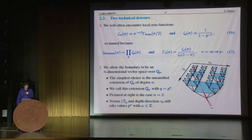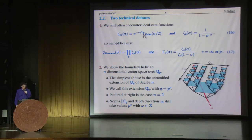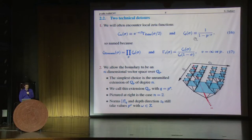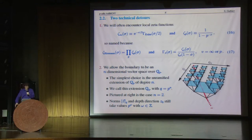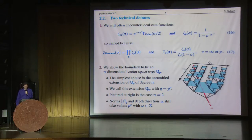Now let me tell you about the so-called local zeta functions. We define a local zeta function for the reals in a particular way, and then I have a more motivated definition of a local zeta function for the prime p. It's motivated because I can write the Riemann zeta function as what is called an Euler product over all primes p of these local zeta functions for each p. If you add in a relation for gamma functions, then the claim that the product over all v of the gammas equals 1 is an equivalent statement of Riemann's functional relation for the zeta function.